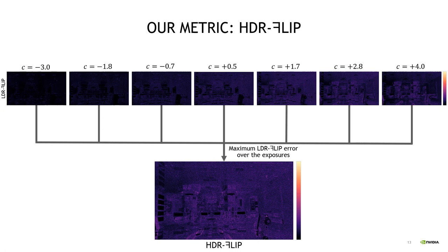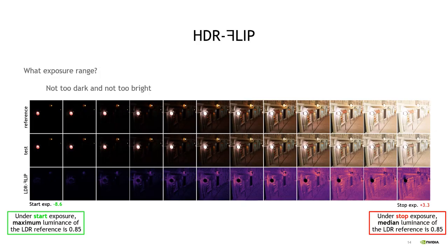Since we take the maximum perceived error over many exposures, HDR FLIP represents the largest error an observer might perceive when the HDR image is displayed. A natural question is what range of exposures should be considered. We have set up an algorithm to compute the range automatically using the maximum and median luminance of the HDR reference image, covering a range from not too dark to not too bright.